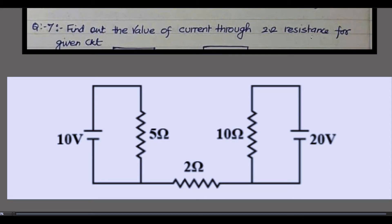Find out the value of current through 2 ohm resistance for the given circuit. Here there is a circuit, and you need to find the value of current through this 2 ohm resistor.